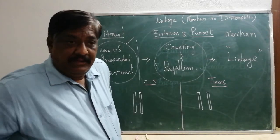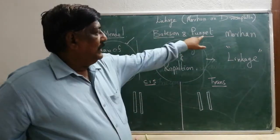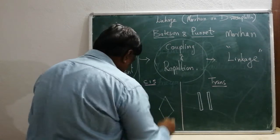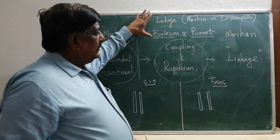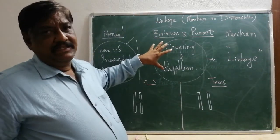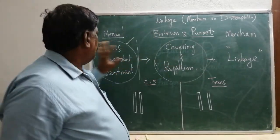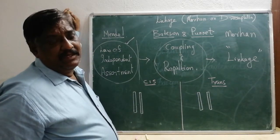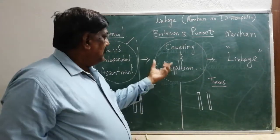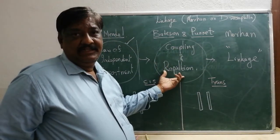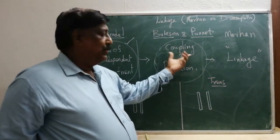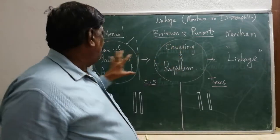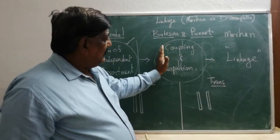Now, is this law 100% applicable? No. When experiments continued, Bateson and Punnett — he is the one who discovered the Punnett square — did some experiments and got results which did not match Mendel's result and did not obey the Law of Independent Assortment. So they used the terms coupling factor and repulsion factor. Coupling factor is when parental types are produced more and recombinations are produced less.